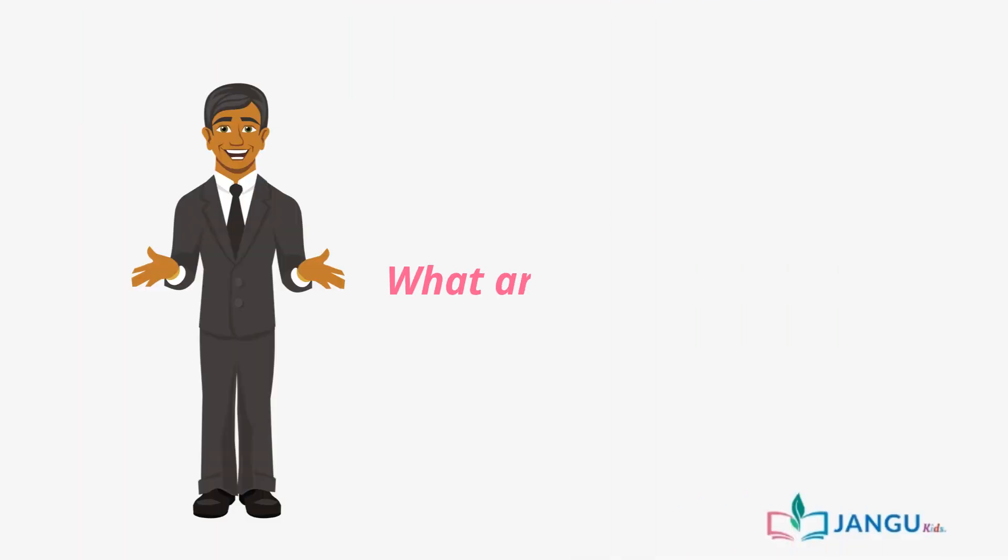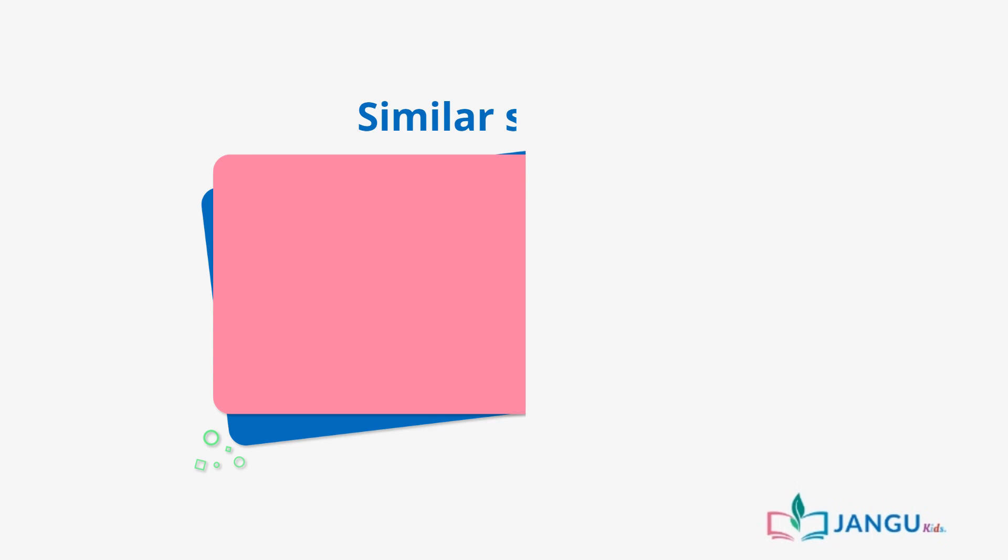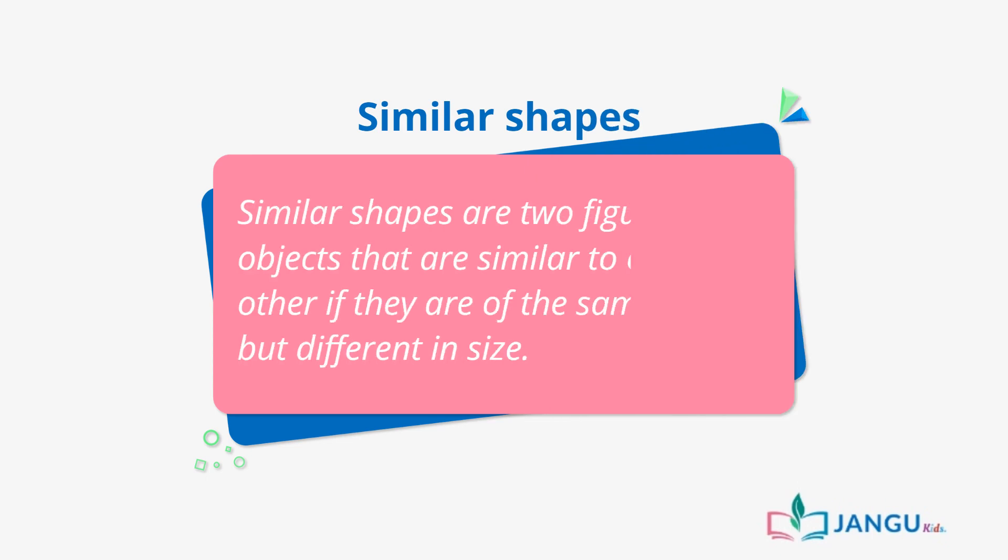What are similar shapes? I'm sure you can guess what it means from the name. In simple terms, similar shapes are two figures or objects that are similar to each other if they are of the same shape but different in size. An example of similar figures is displayed on your screen.